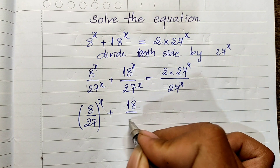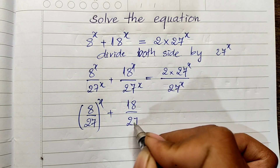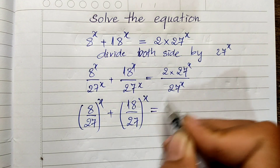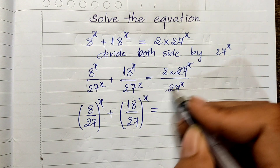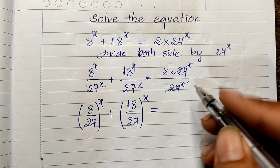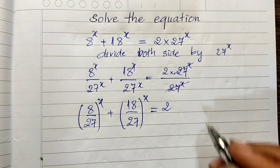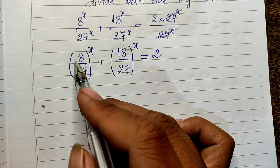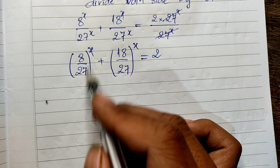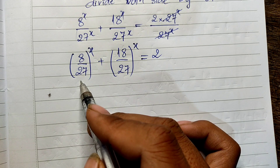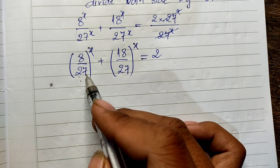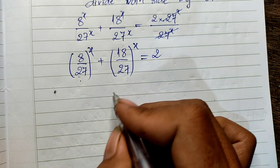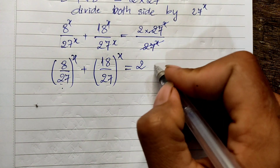This simplifies to: 8 divided by 27, all to the power 8, plus 18 divided by 27, all to the power 8, equals x. Now 18 divided by 27 simplifies — dividing both by 9 — to give 2 divided by 3.